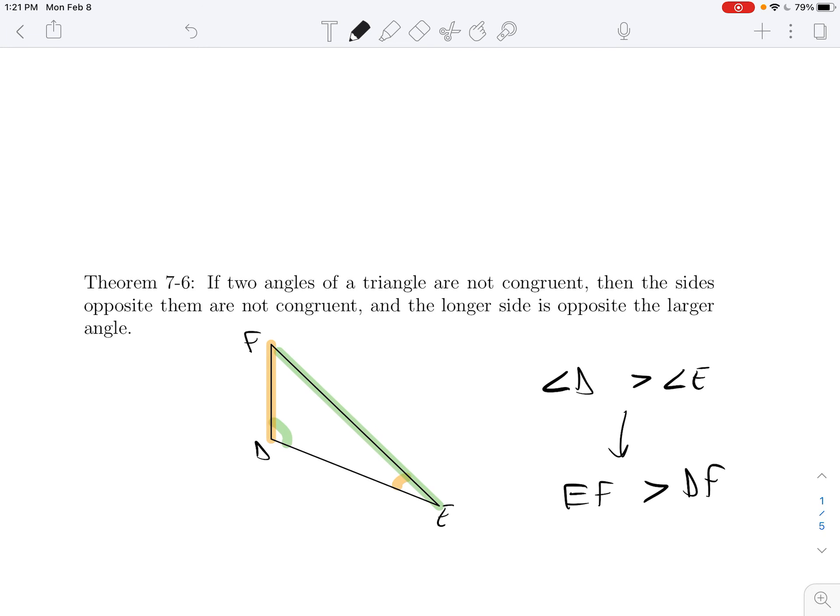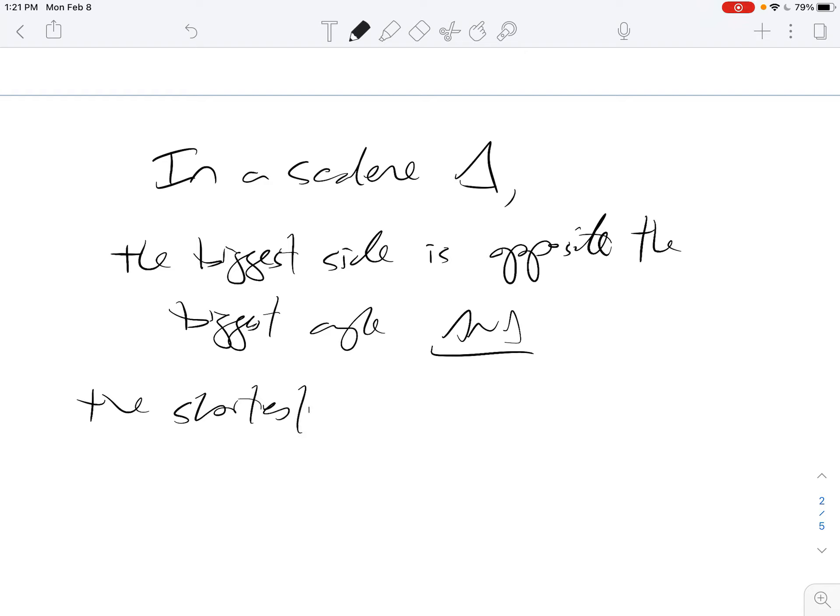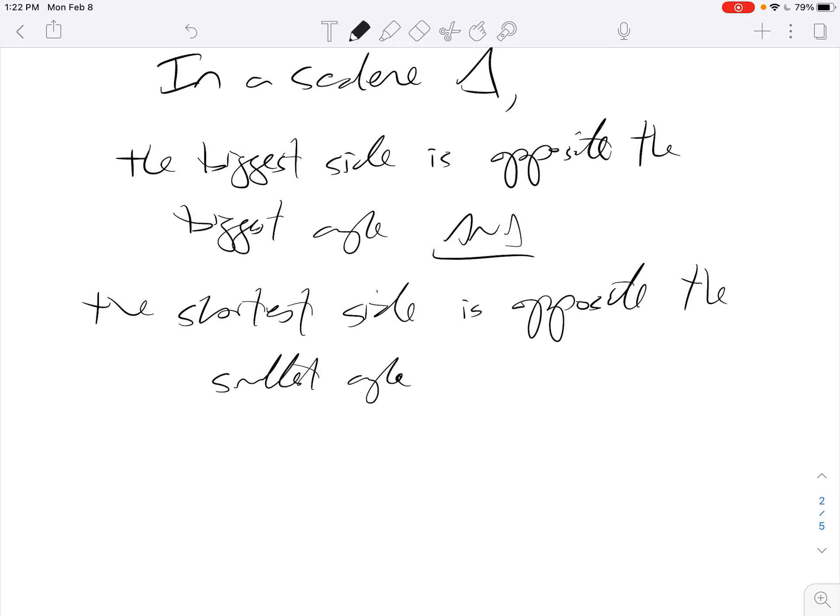And if we use this multiple times, we can compare all three sides. So this is not its own theorem, but we don't have to compare two sides at a time. We can compare three. So I will just say in a scalene triangle, scalene means it's not isosceles, all three sides are different. The biggest side is opposite the biggest angle. And the shortest side is opposite the smallest angle.